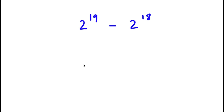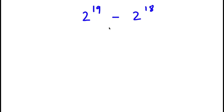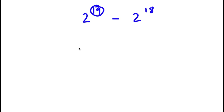In this problem, I have 2 to the power of 19 minus 2 to the power of 18. To solve this problem, I'm going to first start by rewriting 19 here as 18 plus 1.